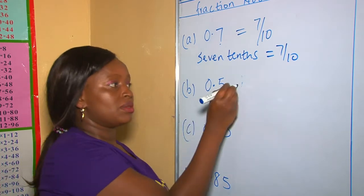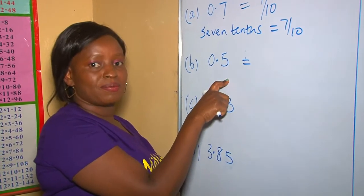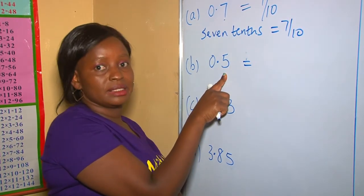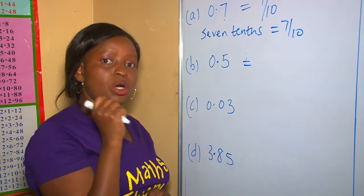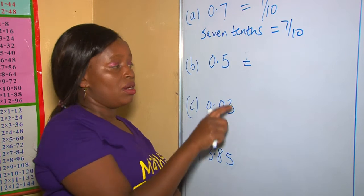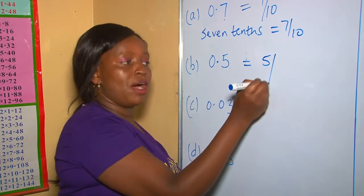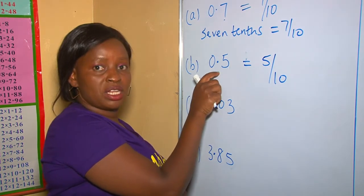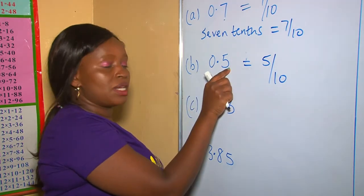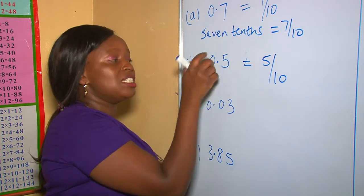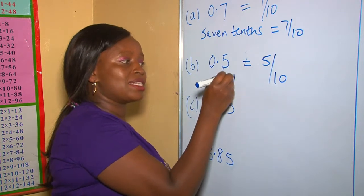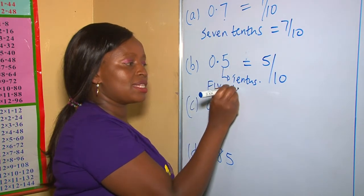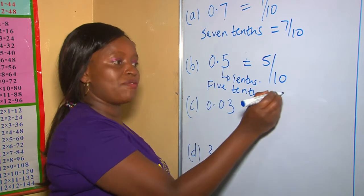Again, we have 0.5. The number of digits after the decimal point is only one digit, meaning our denominator should have only one zero. That is, this should be five out of ten. Or, you can begin by writing the name of the decimal in words: 0.5 is five tenths, because this five takes up the position of tenths. So five tenths as a fraction is five out of ten.